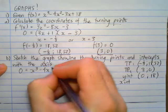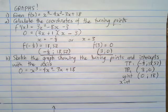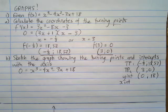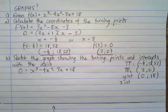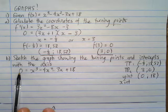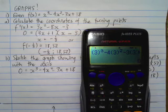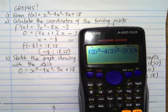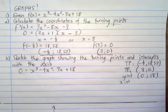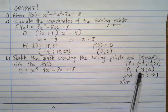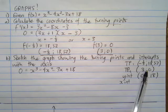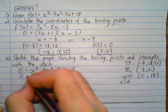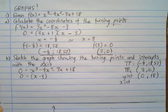Setting 0 = x cubed minus 4x squared minus 3x plus 18, we need to factorize using the factor theorem — finding a value that makes the expression zero. We already know from our turning point that substituting x = 3 gives 0, so (x − 3) is a factor. Therefore one factor that goes into this function is (x − 3), with a leftover bracket to determine.